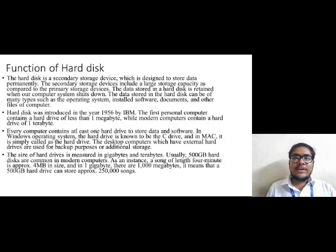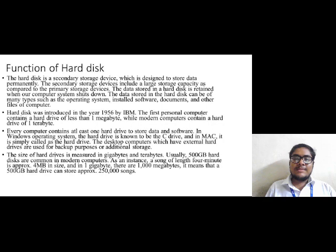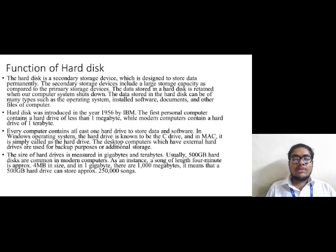Now let's discuss the functions of the hard disk drive. The hard disk drive is the main storage media for computers and not only stores information but can also store any installed software or operating system. It has maximum data storing capacity even at low cost. Usually 500 GB hard disk drives are common in modern computers. For example, a 4-minute song is approximately 4 MB in size, and since 1 GB equals 1000 MB, a 500 GB hard disk drive can store approximately 250,000 songs.